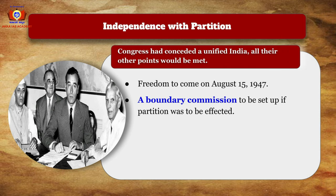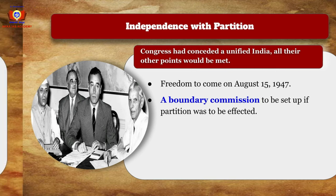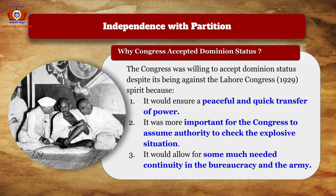Freedom would come on August 15, 1947, and a Boundary Commission was set up if partition was to be effected. The Congress was willing to accept Dominion status despite it being against the spirit of the Lahore Congress session of 1929, because it would ensure a peaceful and quick transfer of power, allow Congress to assume authority to check the explosive situation, and provide much-needed continuity in the bureaucracy and army.